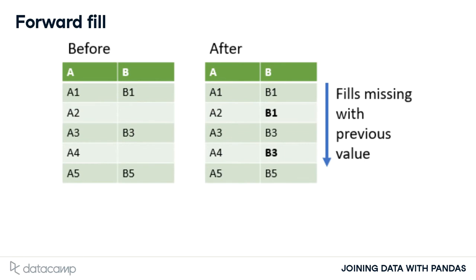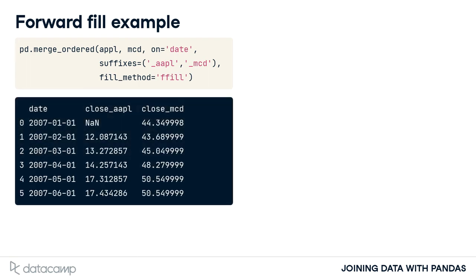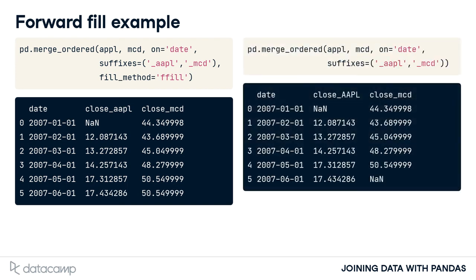We can fill in this missing data using a technique called forward filling. It will interpolate missing data by filling the missing values with the previous value. In the table shown here, the second and fourth rows of column B are filled with the values of B in the rows preceding them. Going back to our stock example, we now set the fill method argument to FFILL for forward fill. Notice that the missing value for McDonald's in the last row is now filled in with the row before it. The table from before is shown on the right for easier comparison. Notice the missing value for Apple in the first row is still missing, since there isn't a row before the first row to copy into the missing value for Apple.